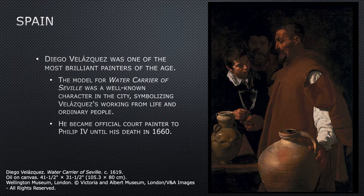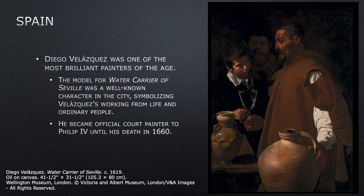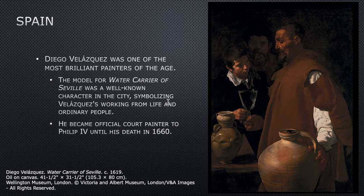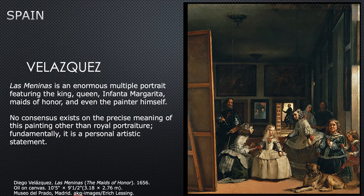Velázquez was one of the most brilliant painters of the age. The model for the 'Water Carrier of Seville' was a well-known character in the city, symbolizing Velázquez's practice of working from life and ordinary people — similar to Caravaggio, his figures look real, not idealized. Velázquez also became the official court painter to Philip IV until his death in 1660. This painting has all of Caravaggio's characteristics: dark background, cropped composition, the water jug almost out of the frame, and dramatic lighting from the left side.